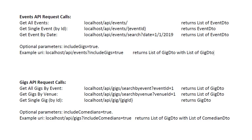For the gigs API request calls, we will have two searches: one by event and one by venue. The user can specify the event for which they want the gigs, and similarly they can specify inside the URI what venue the gigs should be for. Additionally, we will be able to return a single gig by ID. Just like for the events, we will have an optional parameter that will also include the comedians if the user decides so, returning all the gigs as well as each comedian the gigs belong to.